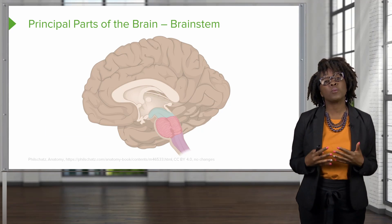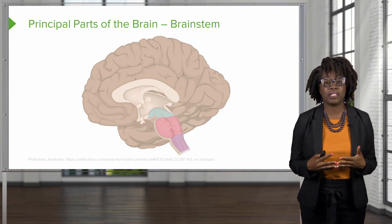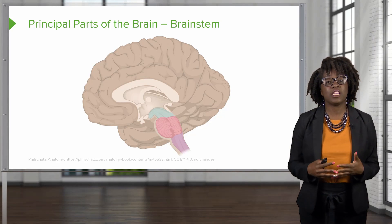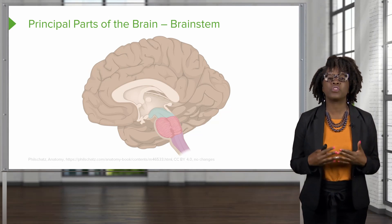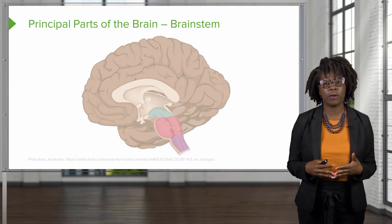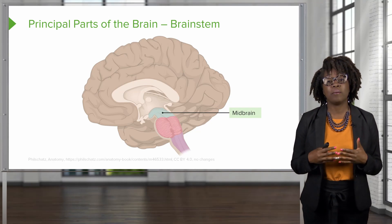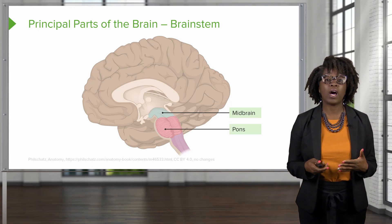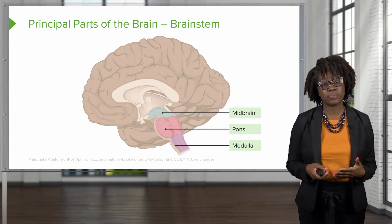The next principal part of the brain is going to be the brain stem. The brain stem sits just inferior to the cerebrum. It includes the midbrain, the pons, and the medulla oblongata.